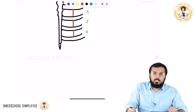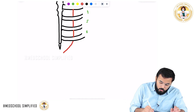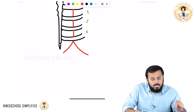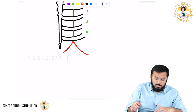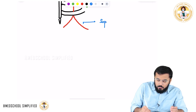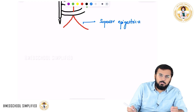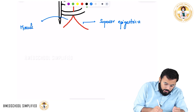This internal thoracic artery, at the sixth intercostal space, divides into two branches. So till the sixth intercostal space it is the internal thoracic artery, and exactly at the sixth intercostal space it divides into two branches: one is called the superior epigastric artery and the other is called the musculophrenic artery.